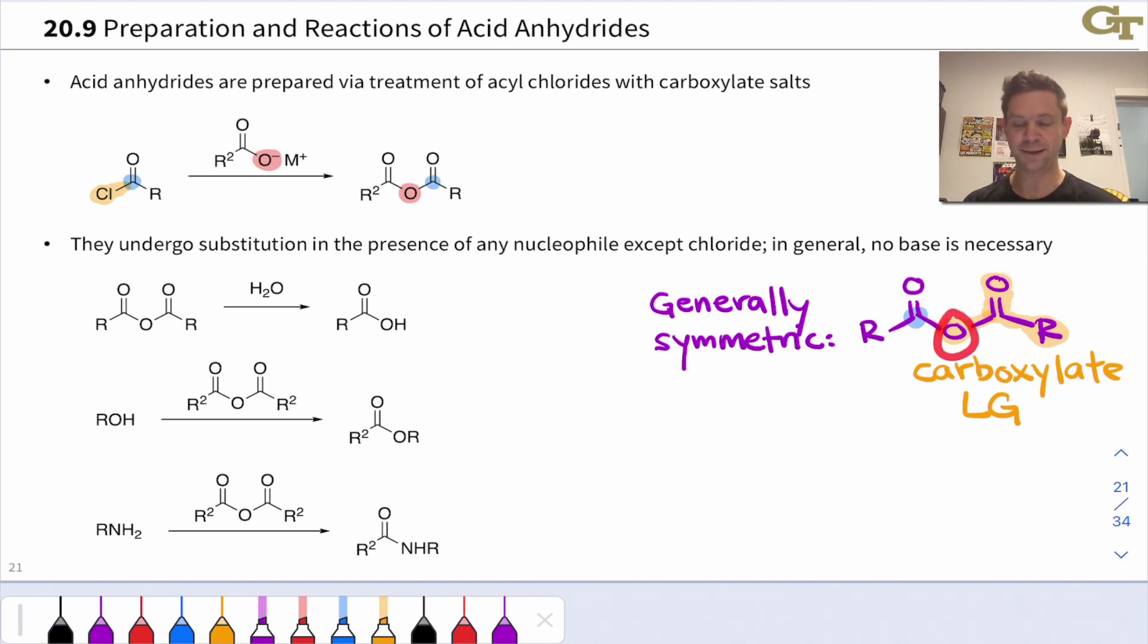We can think of that O in the middle and the other carbonyl group as sharing negative charge in a would-be leaving group. So it's helpful to pick one of the two carbonyl groups, and in a symmetric anhydride it doesn't matter which one you pick, and think of that carbonyl group as electrophilic, and the rest of the molecule as a potential leaving group, highlighted here in orange.